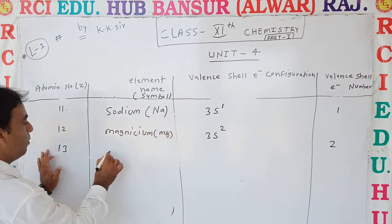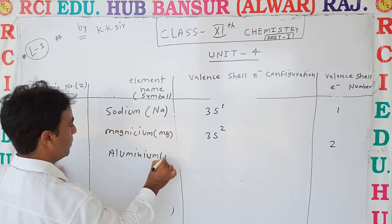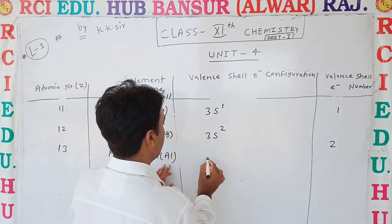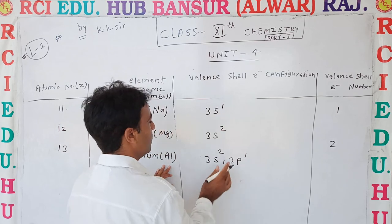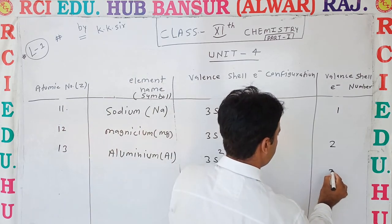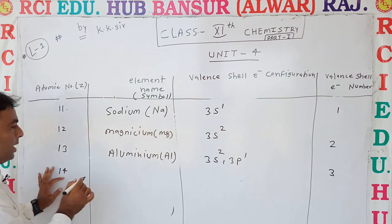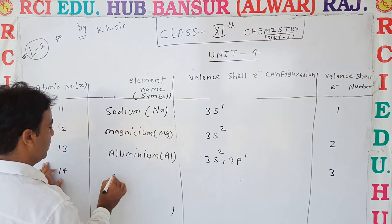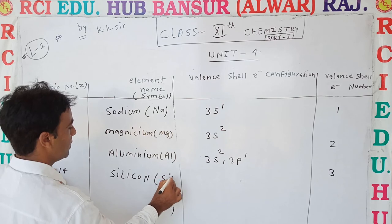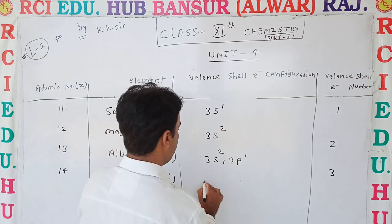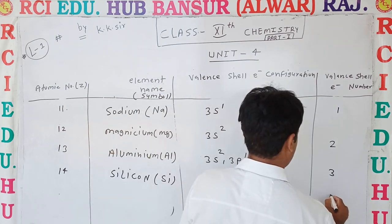Atomic number 13 is Aluminium, symbol Al. Its valence electron configuration is 3s2 3p1, giving 3 valence electrons. Atomic number 14 is Silicon, symbol Si. Its valence electron configuration is 3s2 3p2, giving 4 valence electrons.